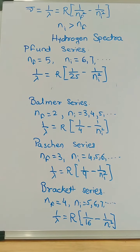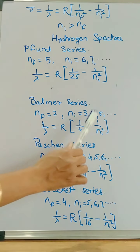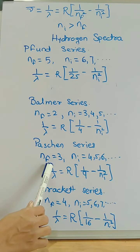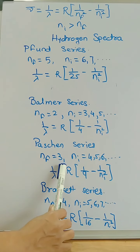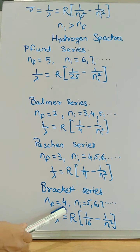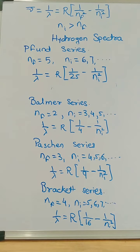Now we will draw the hydrogen spectra. To summarize: for Lyman, nf is 1 and ni is more than 1; for Balmer, nf is 2 and ni is greater than 2; for Paschen, nf is 3 and ni is greater than 3 — nf is the final orbit where the electron will be stable; for Brackett, nf is 4 and ni is greater than 4; for Pfund, nf is 5 and ni is greater than 5. With this information we will draw the hydrogen spectra.